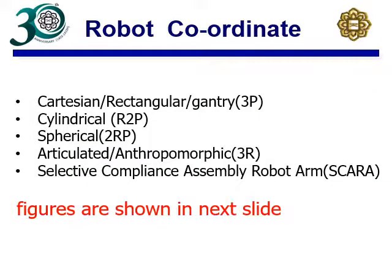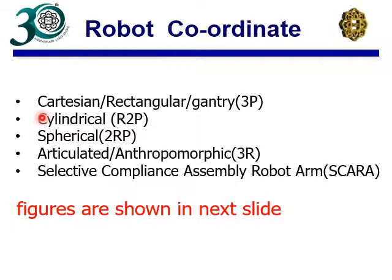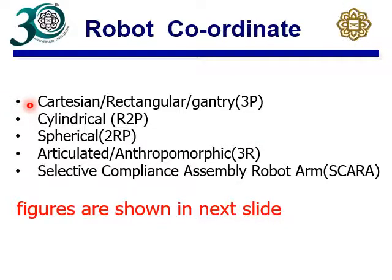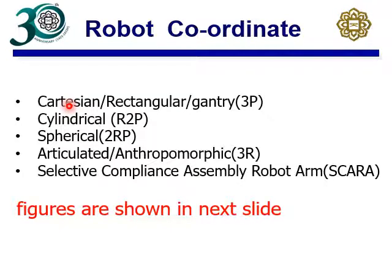Now let's talk about the robot coordinate system. There are various robot coordinate systems, basically divided into five configurations for industrial robots. The first is the Cartesian coordinate system, which consists of three prismatic joints — that's why it's noted as 3P. It has X, Y, and Z translational axes, all perpendicular to each other. An example is a basic CNC machine.